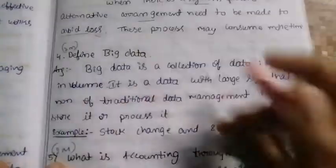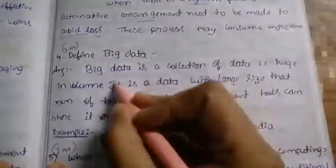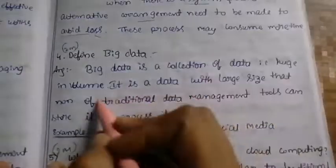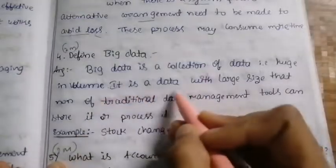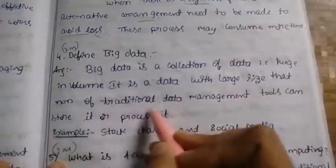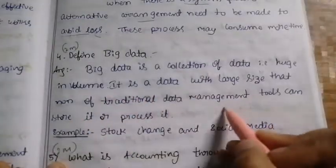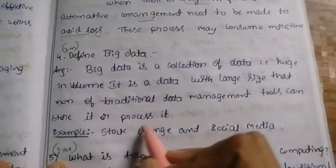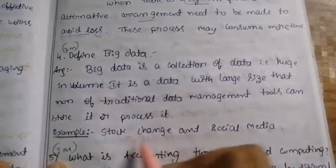Define big data. Big data is a collection of data that is huge in volume. It is data of such large size that traditional data management tools cannot store or process it.